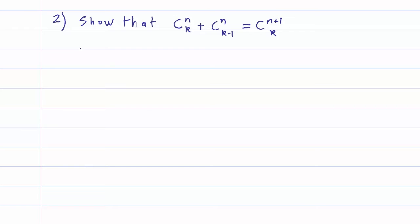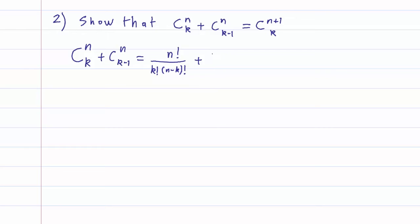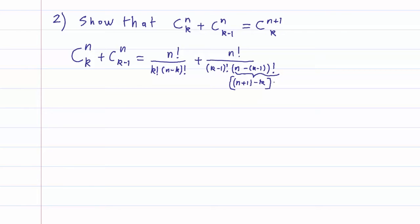To show this, we're just going to use the definition: C(k,n) plus C(k-1,n). C(k,n) is n factorial over k factorial times (n minus k) factorial. And similarly for C(k-1,n), we have n factorial at the top, and k minus 1 factorial times n minus (k minus 1) factorial at the bottom. Note that n minus (k minus 1) is the same as n plus 1 minus k factorial.